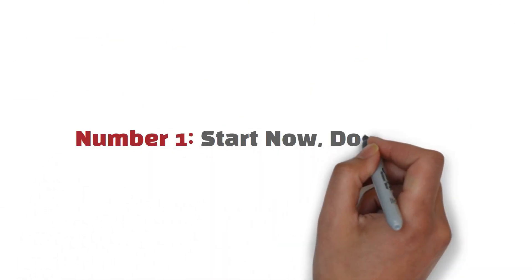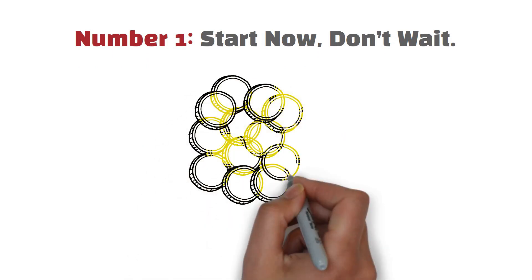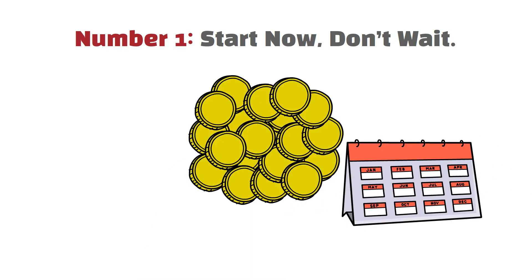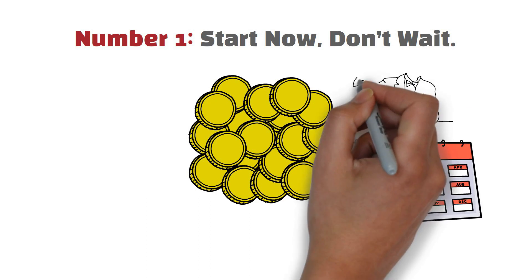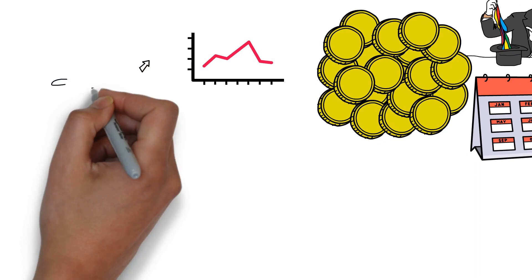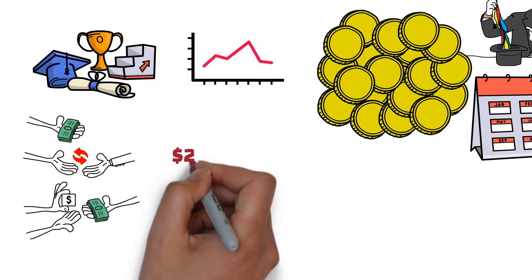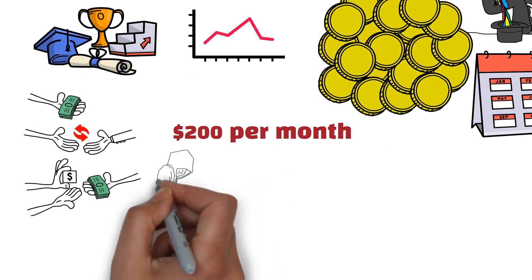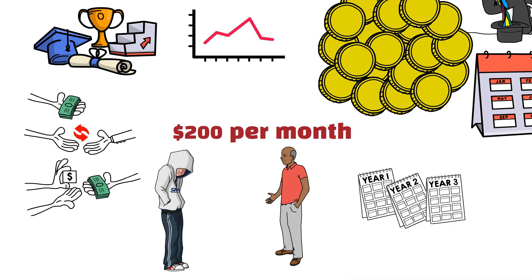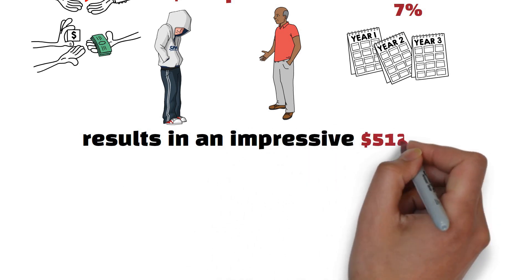Number 1. Start now. Don't wait. Time, the most elusive yet powerful currency in our financial journey, beckons us to start now, not tomorrow, not next year. The magic of compounding works wonders. And the earlier you embark on your financial expedition, the more substantial the rewards. Picture this: Investing a modest $200 per month from the tender age of 25 until the golden retirement age of 65, assuming a realistic 7% annual return, results in an impressive $512,700.